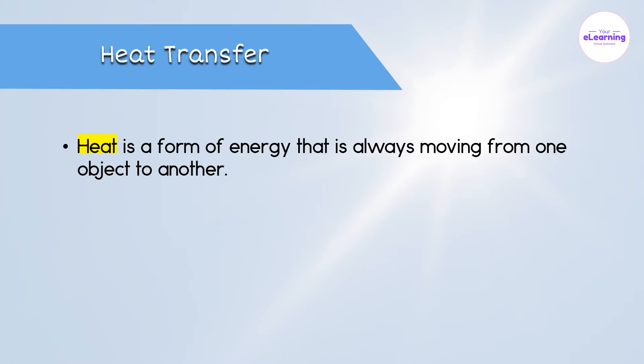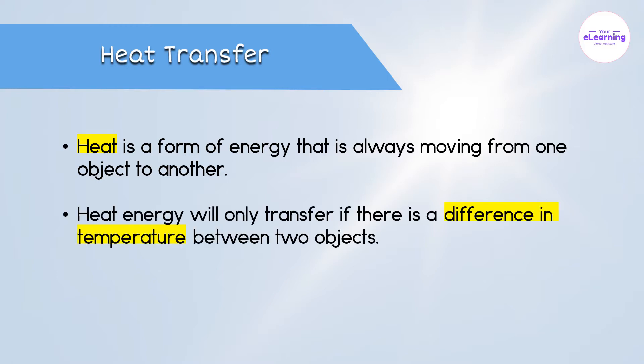Heat is a form of energy that is always moving from one object to another. Heat energy will only transfer if there is a difference in temperature between two objects. The direction of heat transfer will always be from a hotter object to a colder object.